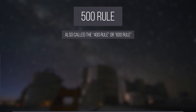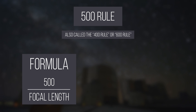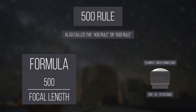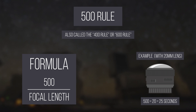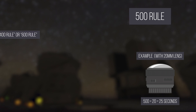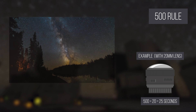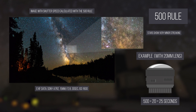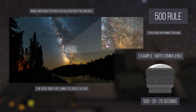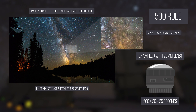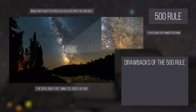It involves taking the larger number and dividing it by the focal length of your lens. This rule is not a bad formula, but you should avoid it if you can. The rule was designed for 35mm film grain at higher ISOs, but current digital sensors far out-resolve grainy film.